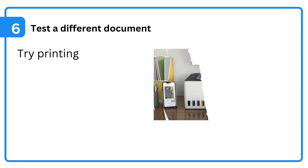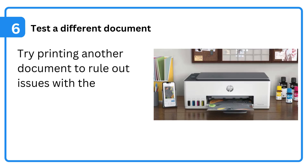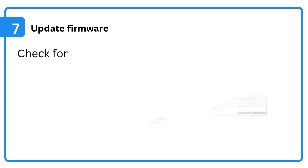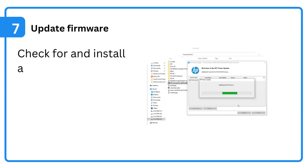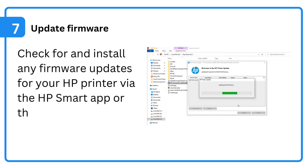6. Test a different document — try printing another document to rule out issues with the file you were initially trying to print. 7. Update firmware — check for and install any firmware updates for your HP printer via the HP Smart app or the printer's control panel.